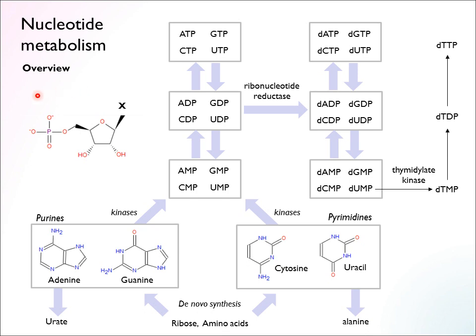So this is the typical nucleotide structure. It consists of a phosphate — or sometimes multiple phosphates if it's highly phosphorylated. There's a ribose linkage, and this can sometimes be a deoxyribose if it's DNA — a deoxyribonucleotide. And then there's the base, which could be several cases. So that's the nucleobase.